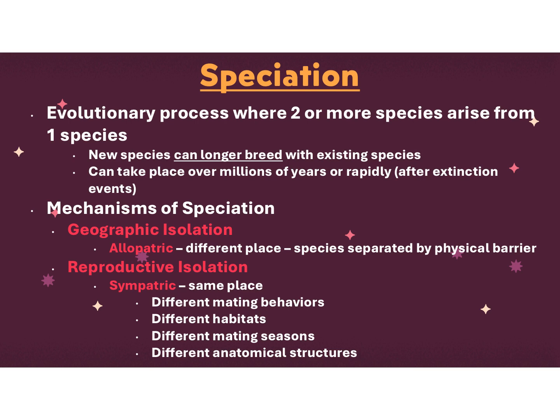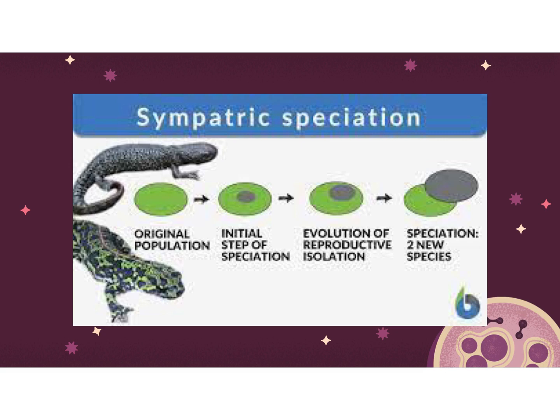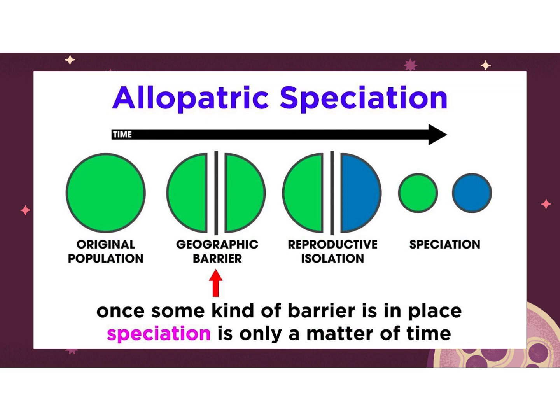Reproductive isolation barriers include mating behavior differences, habitat differences — for example, fish and birds never come in contact — mating season or time of day, and different anatomical structures. Sympatric speciation is where speciation occurs with animals living in the same area — sympatric means in the same area, but other barriers to reproduction keep them separate species. Allopatric speciation is where there's always a physical or geographic barrier — they live in different places and physically don't come into contact.